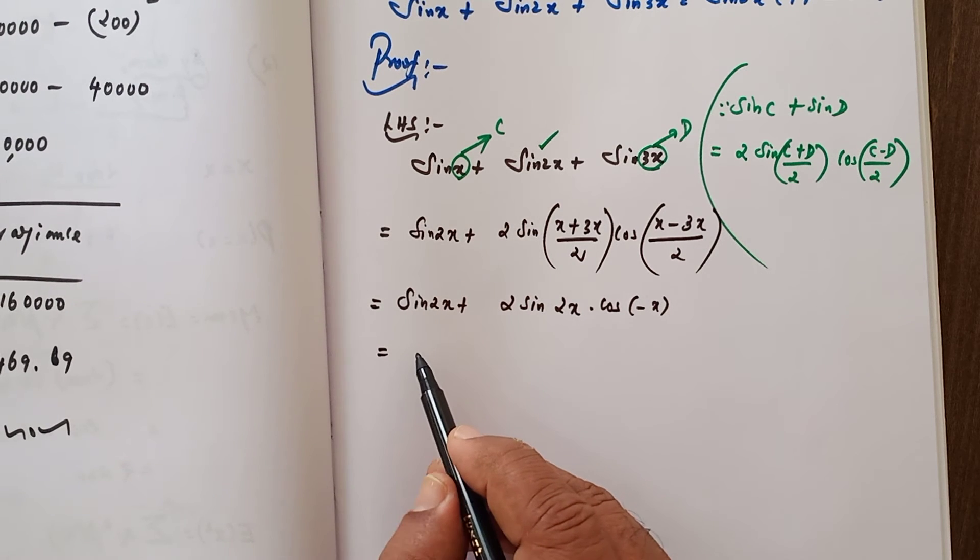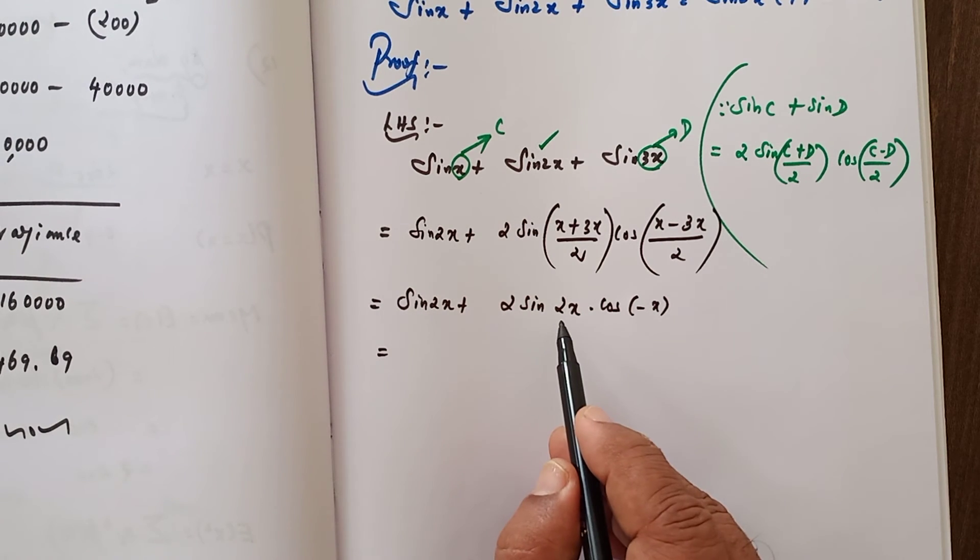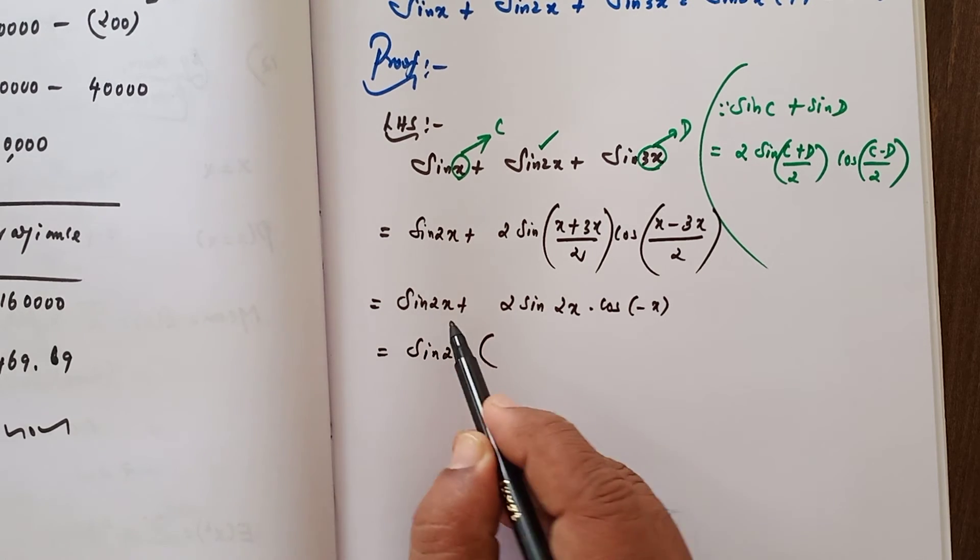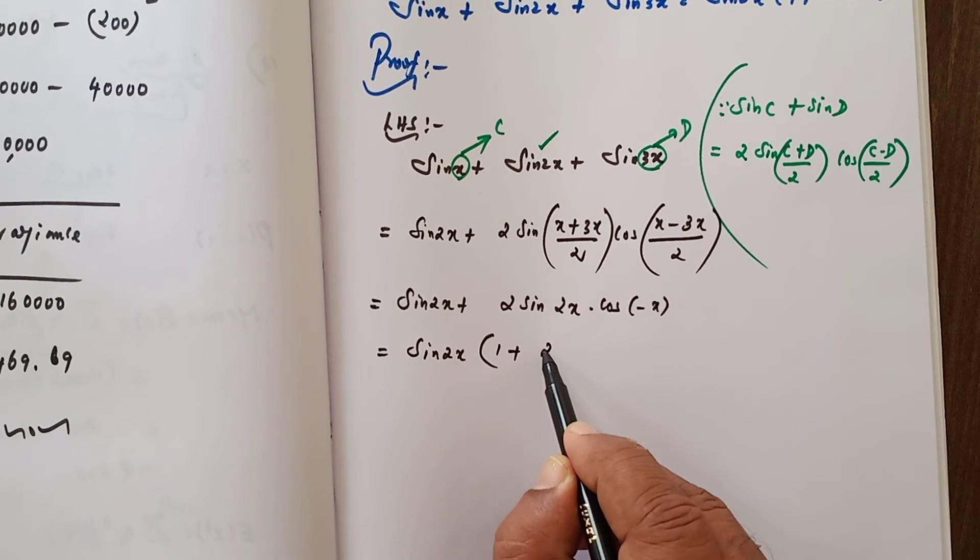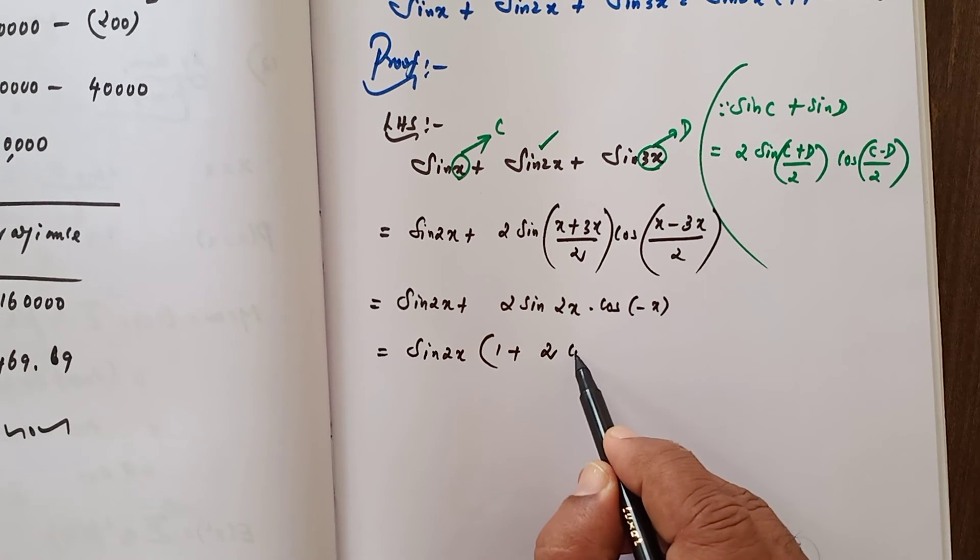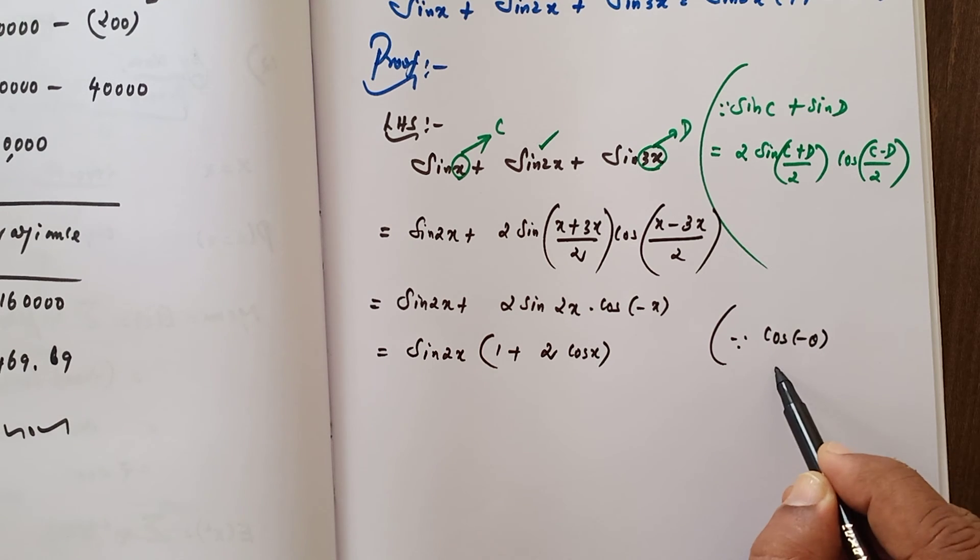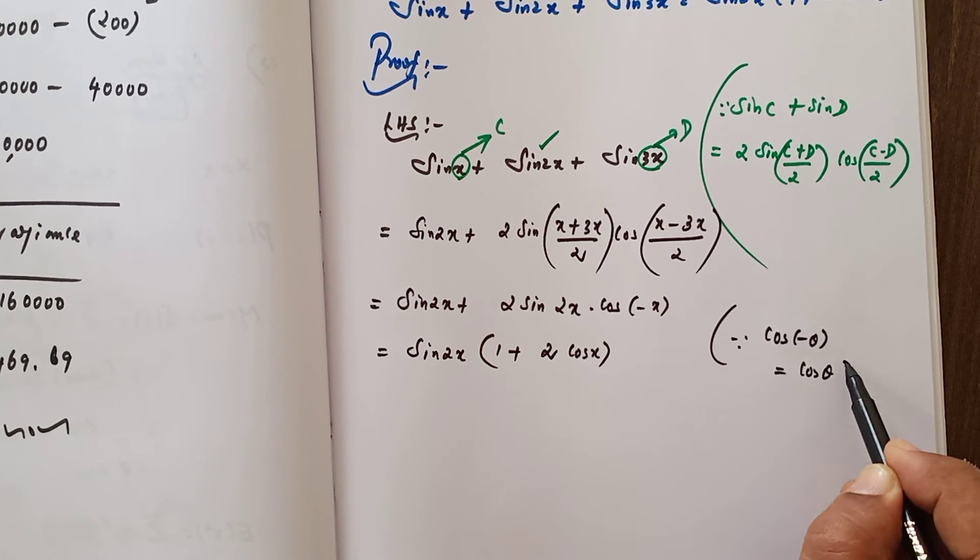Here sin 2x, there also sin 2x. Take sin 2x as common. If we take sin 2x as common, here 1 will be there, 2 cos of minus x, which is equal to cos x, since cos of minus theta equals cos theta.